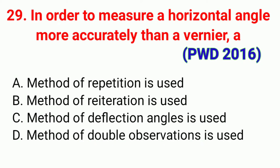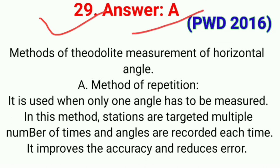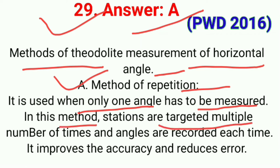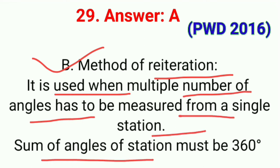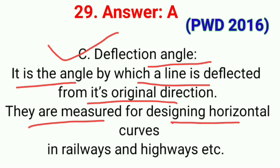Question number twenty-nine: In order to measure a horizontal angle more accurately, the method used is. The correct answer is option A, method of repetition. In the method of repetition, only one angle is measured; stations are targeted multiple times and angles are recorded each time, improving accuracy and reducing error. The method of reiteration is used when multiple angles have to be measured from a single station, and the sum of angles at the station must be 360°. The method of deflection angle measures the angle by which a line is deflected from its original direction, used for designing horizontal curves in railways and highways.